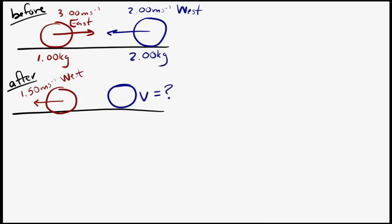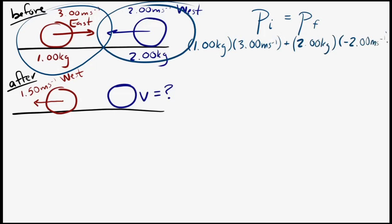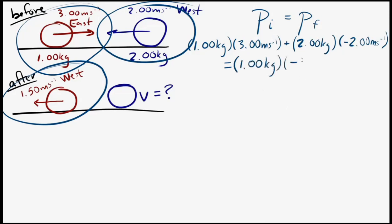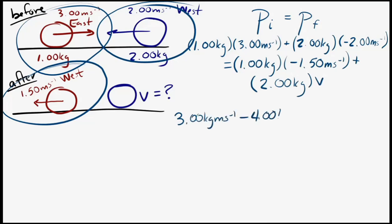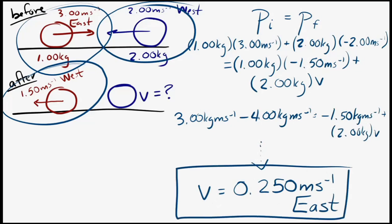This is a collision so momentum is conserved. The total initial momentum is the momentum of the first sphere plus the momentum of the second sphere. That must equal the total final momentum: the known momentum of one sphere plus mass times velocity for the other. Solving for the unknown final velocity, the first sphere ends up with a velocity of 0.250 meters per second, and the positive sign means it's moving to the east.